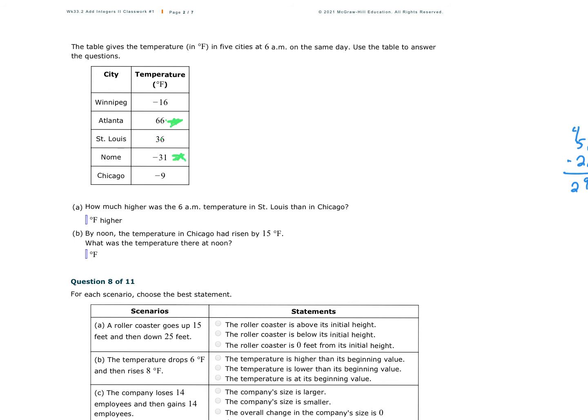How much warmer was the 6 a.m. temperature in St. Louis than Chicago? So it's 36 minus, we're finding the difference, negative 9. Don't do positive 9. If you did 36 minus 9, that would give you 27. That doesn't make sense. This is 36 above 0. We're going past 0 to negative 9. So 36 minus negative 9, minus negative is the same as adding. 36 plus 9. My answer is 45 degrees, which makes sense. Those would be 45 apart.